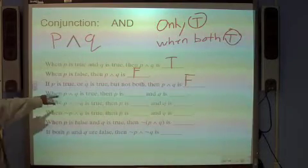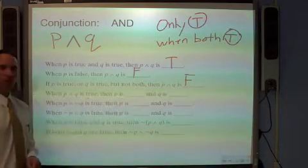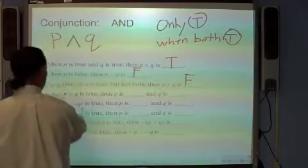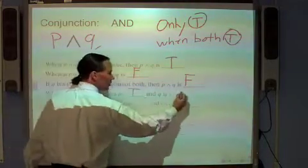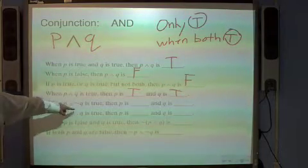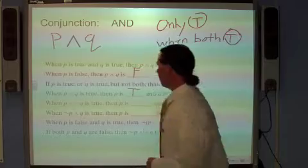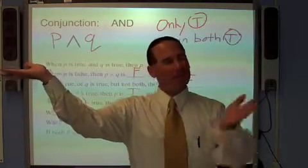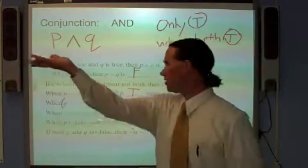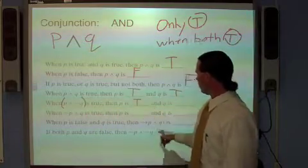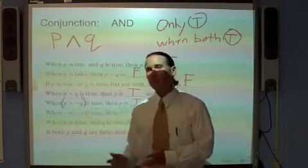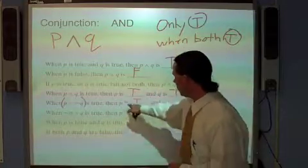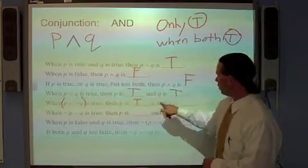If P and Q is a true statement, that tells you P is true and Q is true — you have both. Now, P and not Q: if P and not Q is a true statement, that means P is true and not Q is true. So P is easy — P has to be true. What about Q? If not Q is true, then Q is false. So if P and not Q is true, we get P true and Q false.